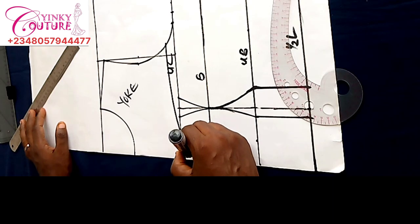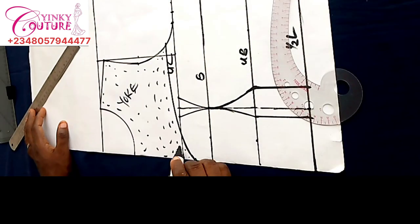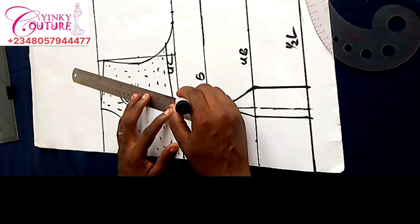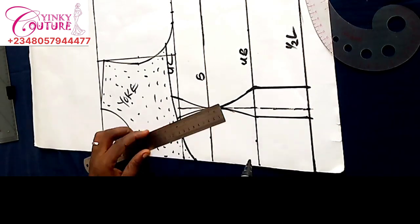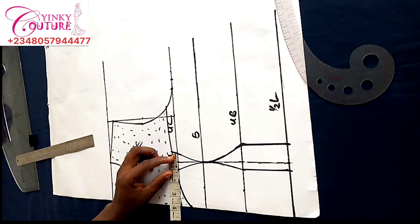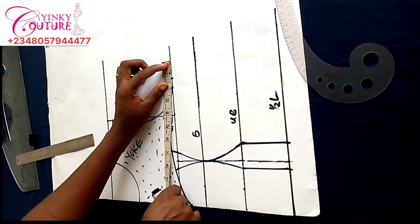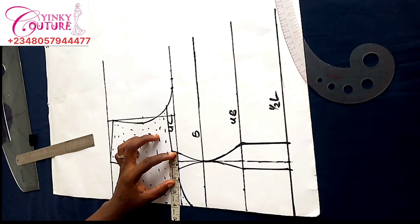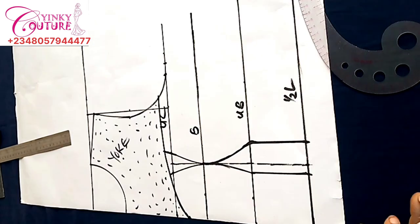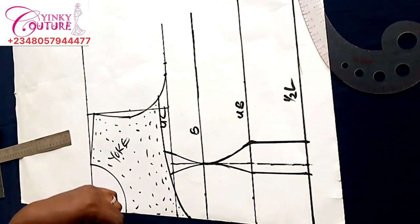I go inward by one inch here and connect it to the upper chest line. After that, the yoke has been created — I'll shade it so as to know the part that is cut off for the yoke. The bustier has been created. The next thing is to calculate all my dart intake. I have one inch there, and I'm going to add it to whatever measurement is on the upper chest.